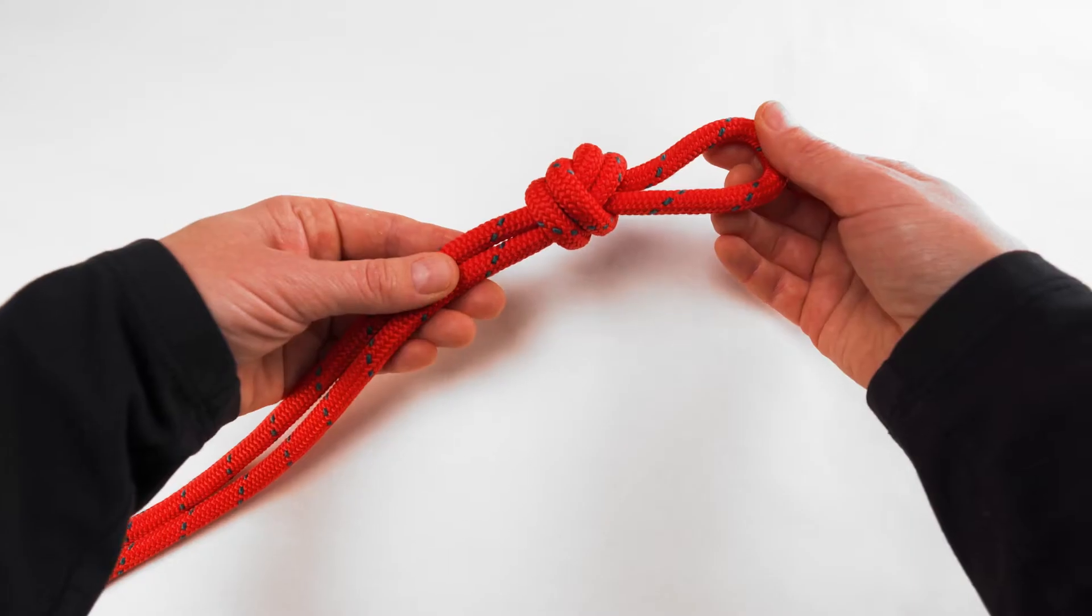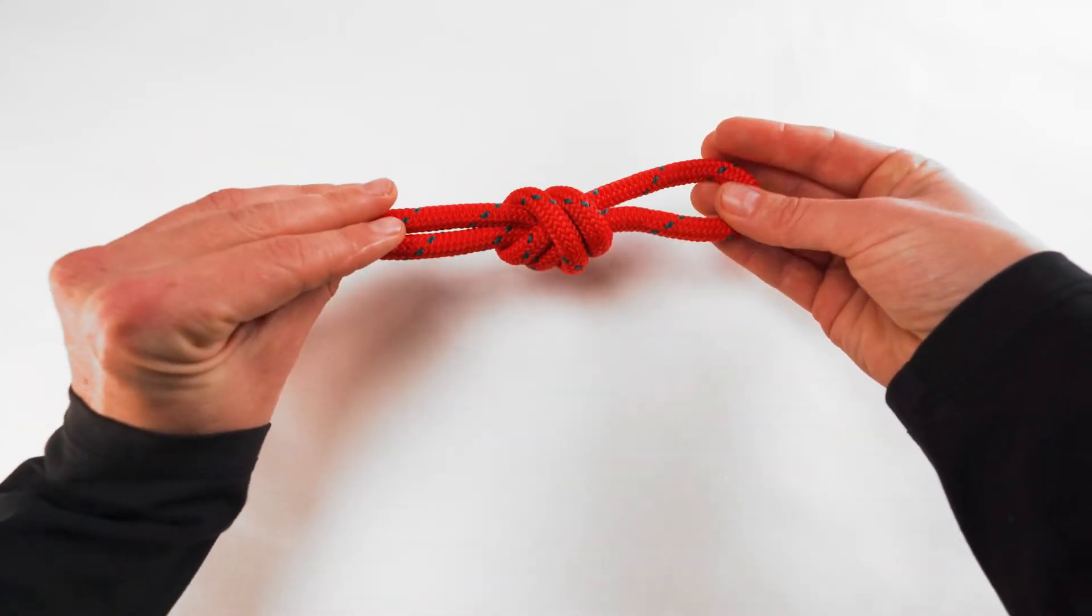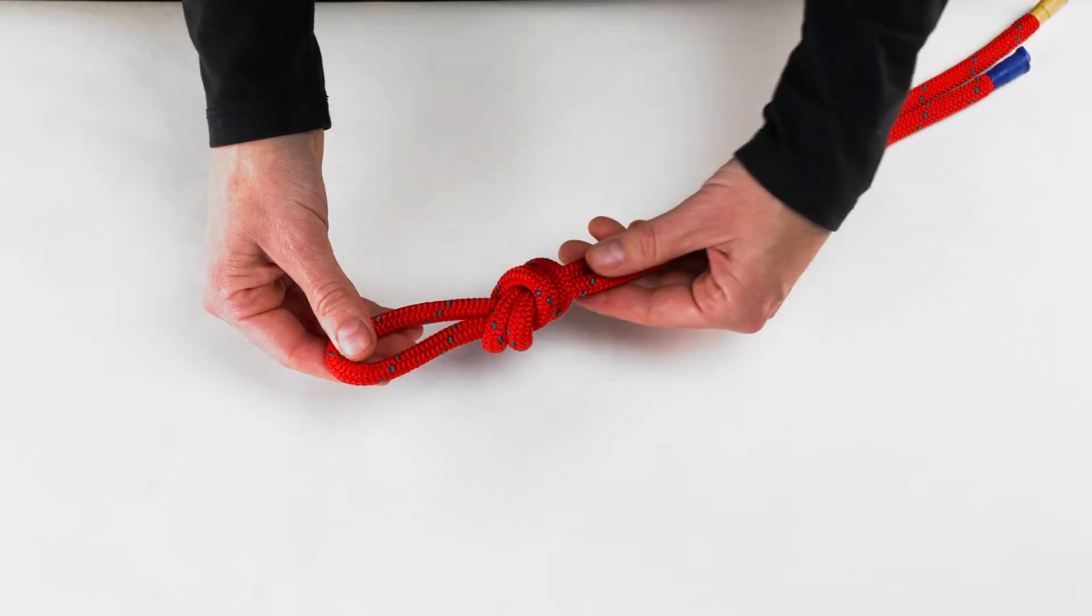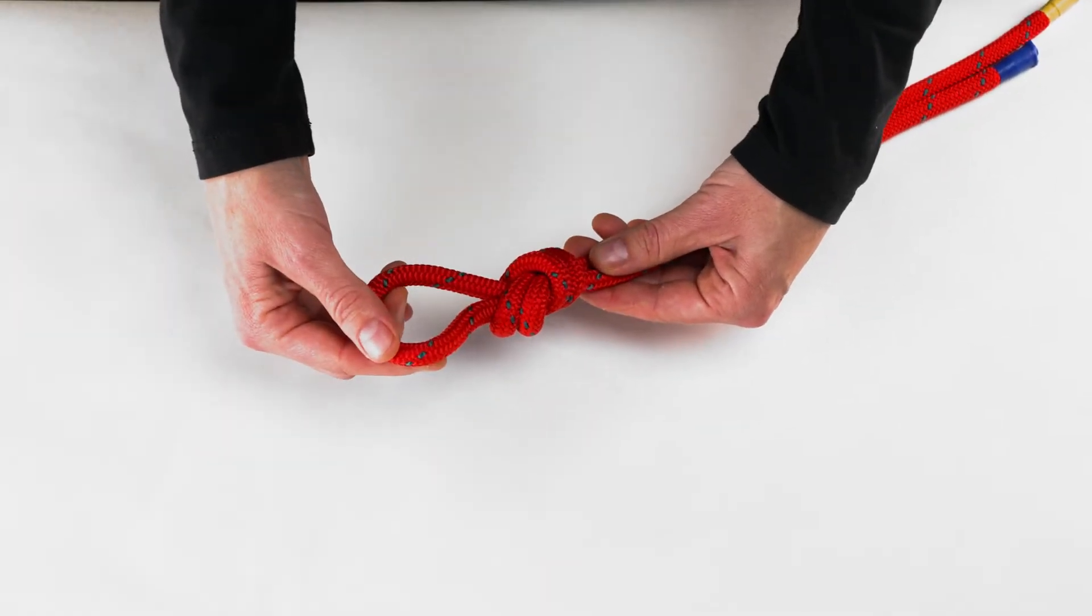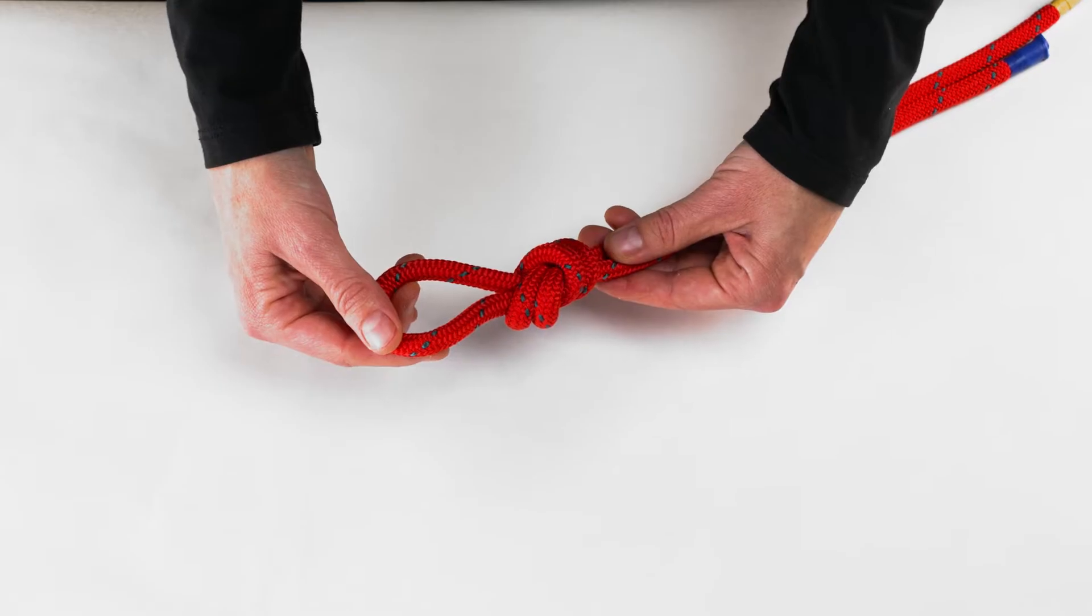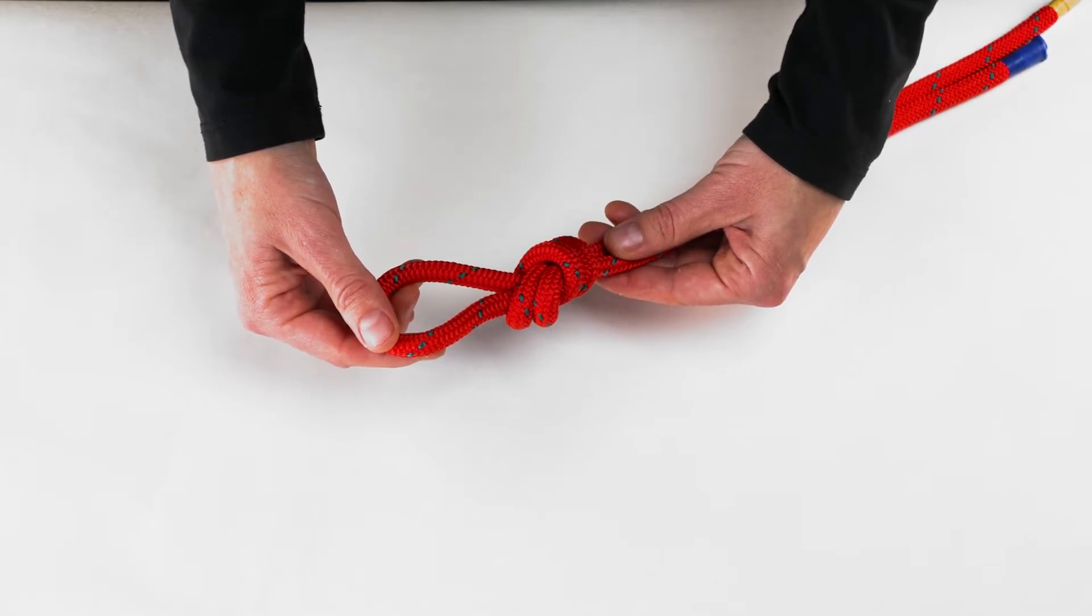By doubling over the end of the rope to form a bite, an overhand knot is tied to create a loop. This is easy to tie but can be difficult to untie once loaded.